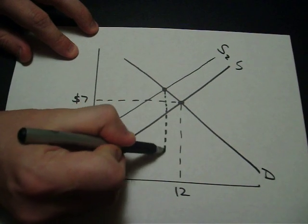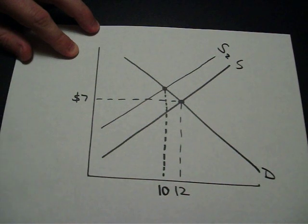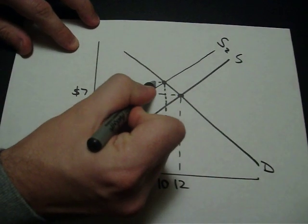I'm going to trace all the way down to get our new equilibrium quantity. Perhaps that new equilibrium quantity is $10. And this new equilibrium price,